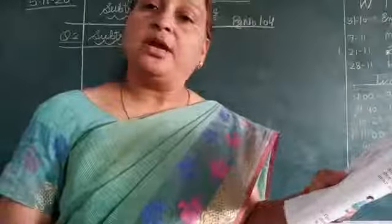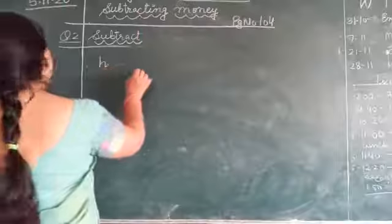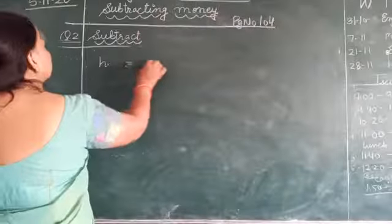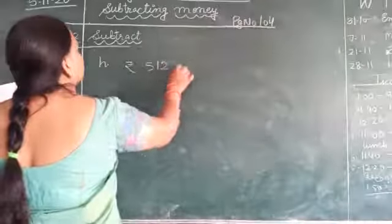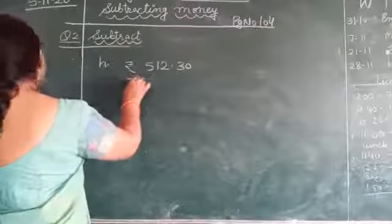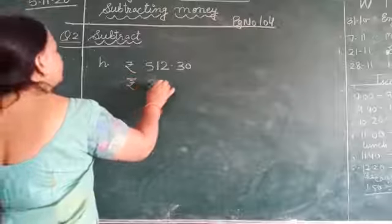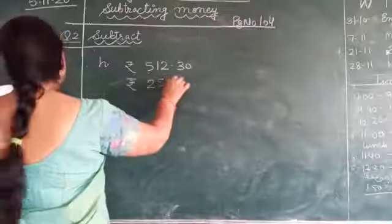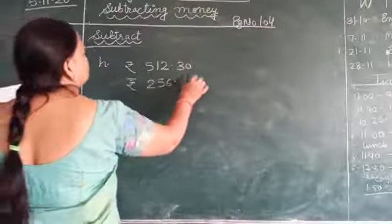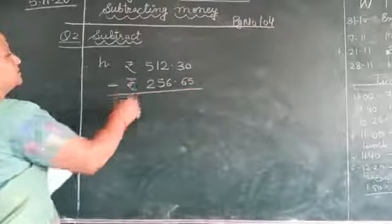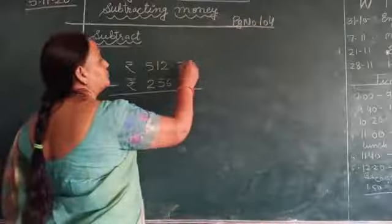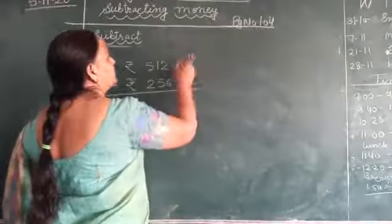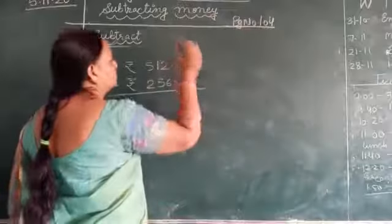Now we will do H. 512.30 minus 256.65. Now we will do 0, so we will make it 10.